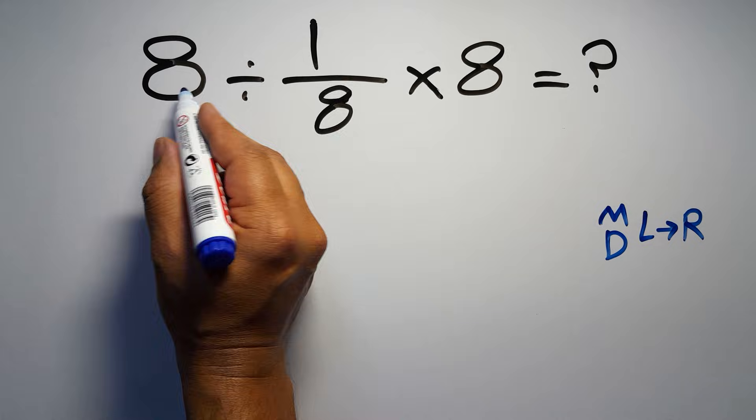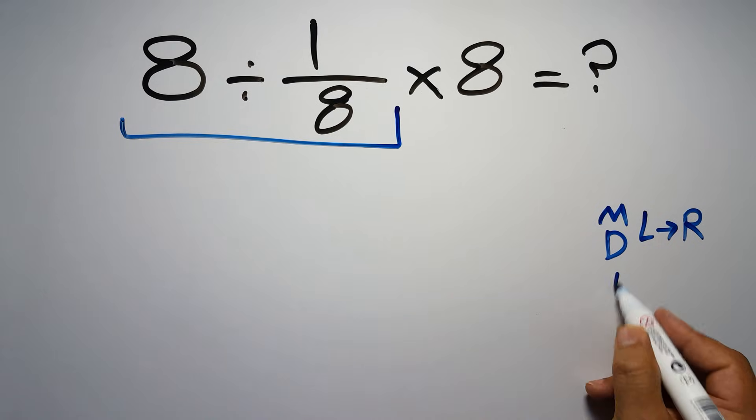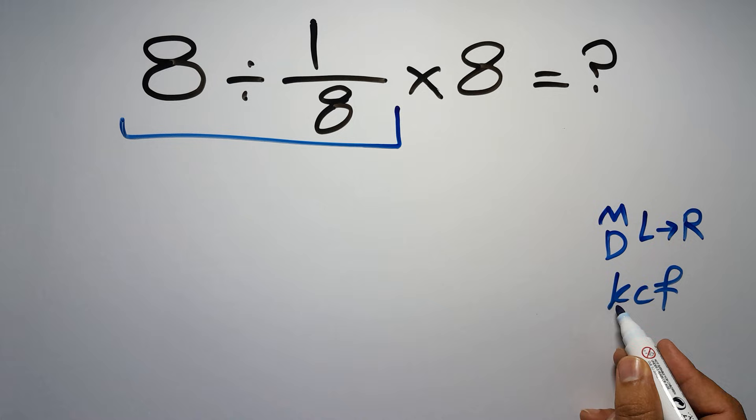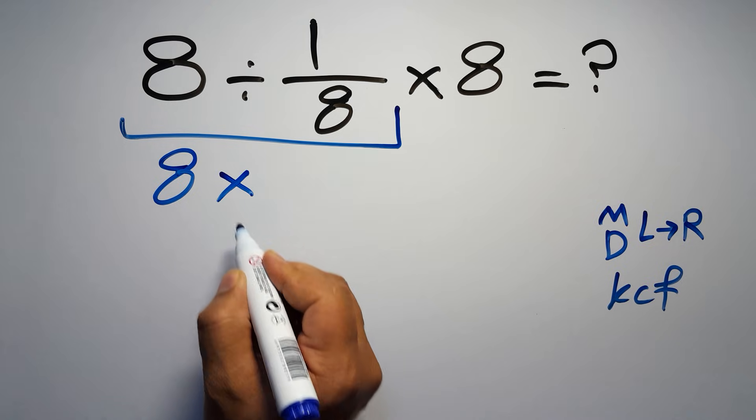So first, this division: 8 divided by 1 over 8. According to the KCF rule, K stands for Keep, C stands for Change, and F stands for Flip. We keep the first fraction, change division to multiplication, and flip the second fraction.